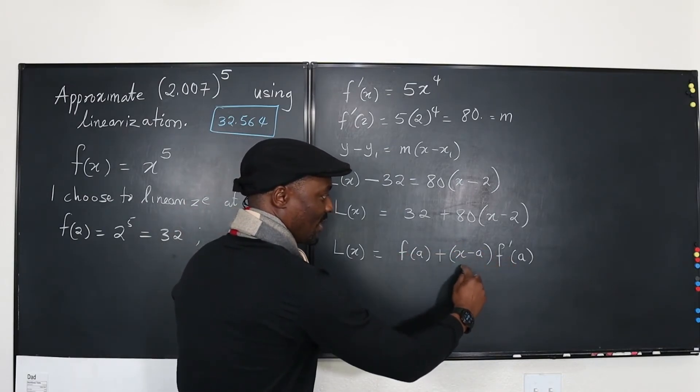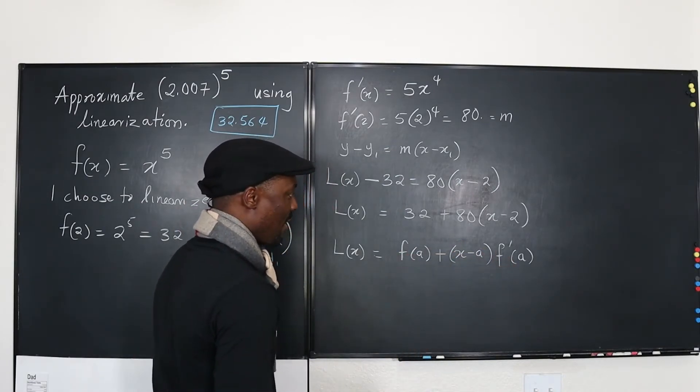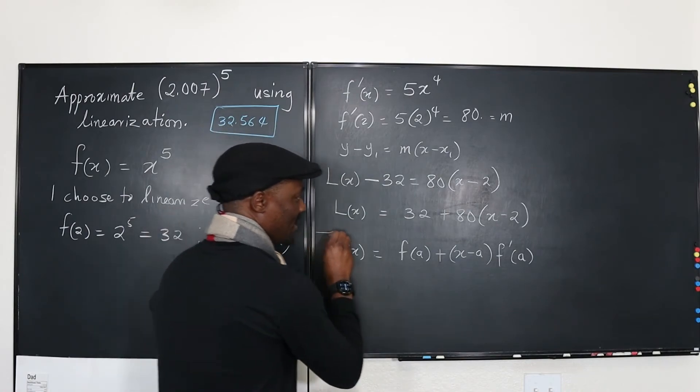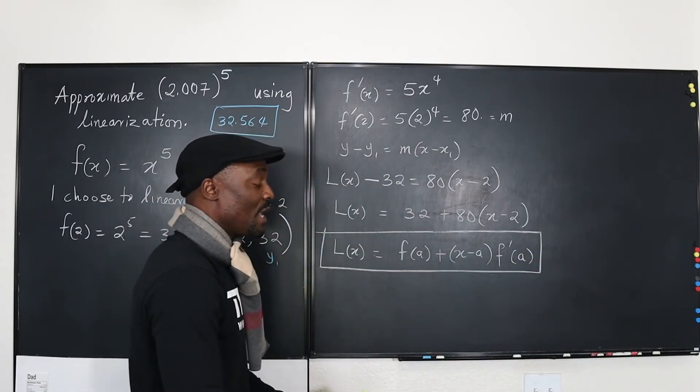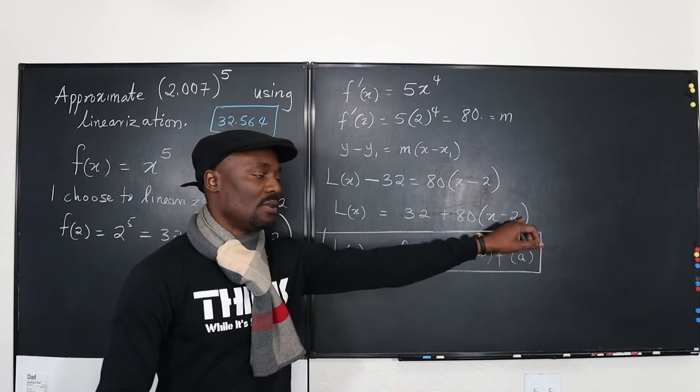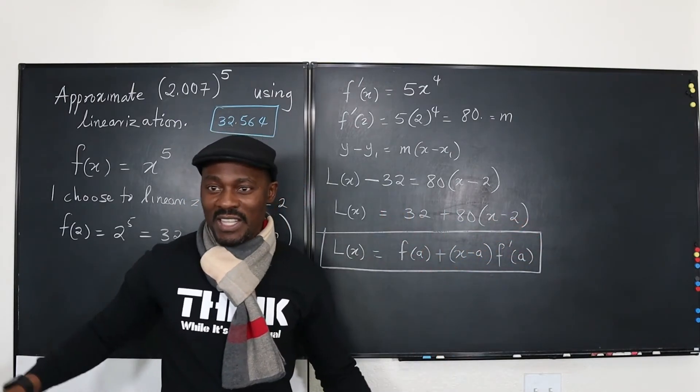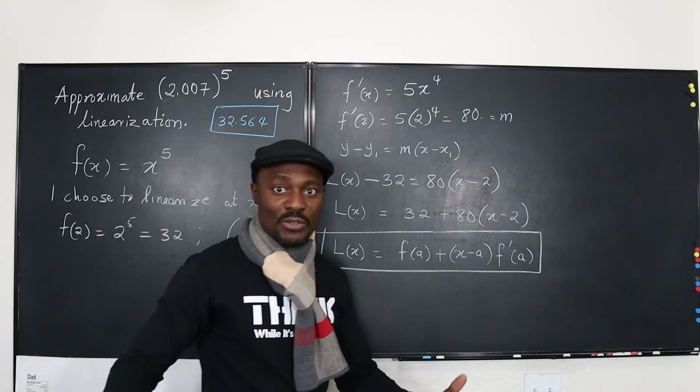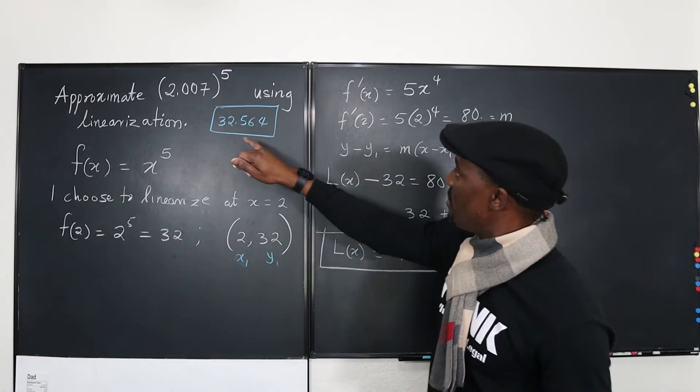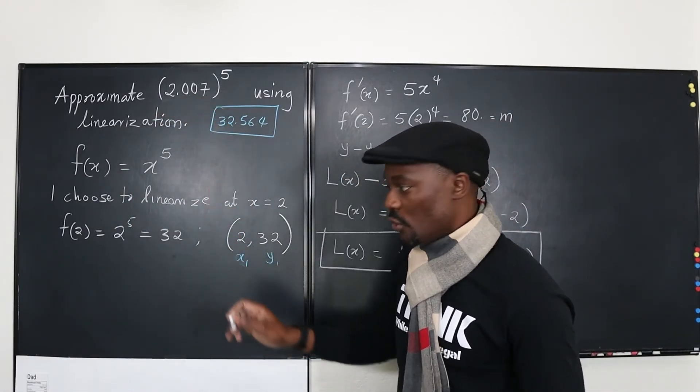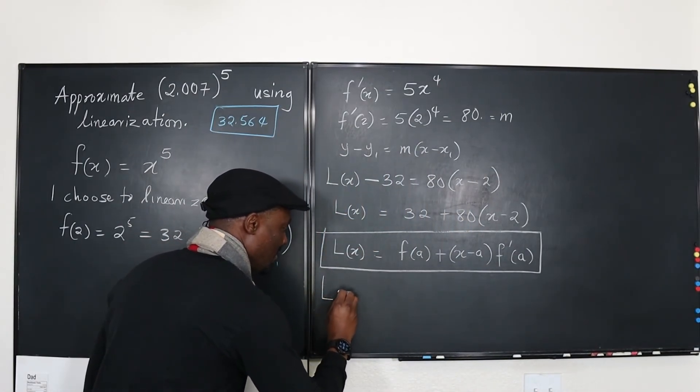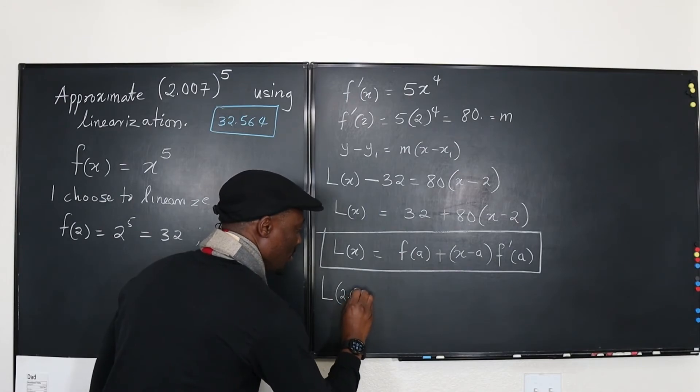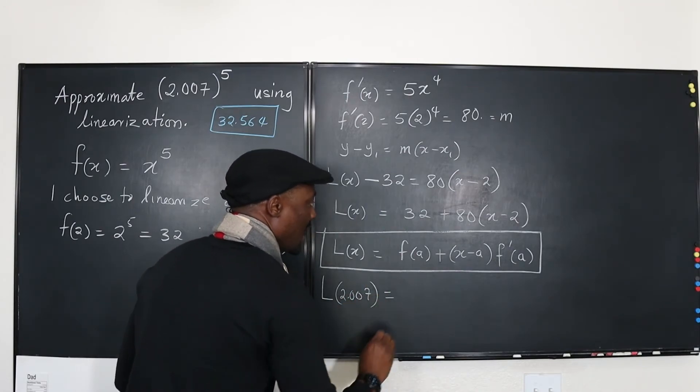So now I'm going back to solving this problem. Let me put this in a box. So in case you want to know what it is. So now the point, so we have the equation. So what is the point? What is exactly the value of x we're trying to evaluate? It's 2.007. So we're going to use this formula now to evaluate this. So the linearization of 2.007 is now going to be 32 plus 80 times 2.007 minus 2.